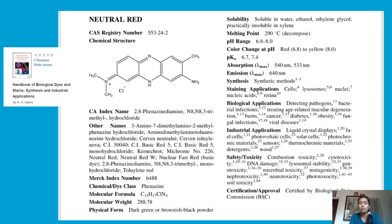Neutral Red's staining applications include cells, lysosomes, fungi, nucleic acids, retina, and leukocyte stains. Its biological applications include detecting pathogens and bacterial infections, treating macular degeneration, burns, cancer, diabetes, obesity, fungal infections, and viral diseases. These cover the wide range of biological and medical uses of Neutral Red.